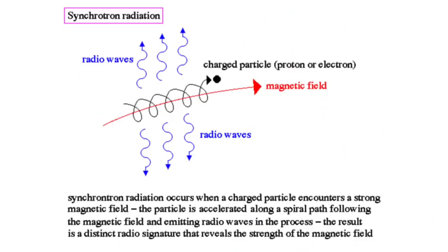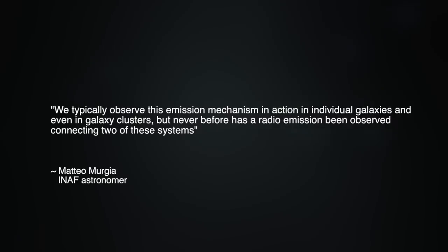The radio emission from the filament is called synchrotron radiation, which is produced by the tremendous acceleration of electrons along the filament at relativistic velocities. As stated by astronomer Matteo Mergia, we typically observe this emission mechanism in action in individual galaxies and even in galaxy clusters, but never before has a radio emission been observed connecting two of these systems.